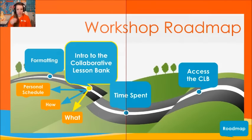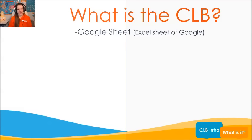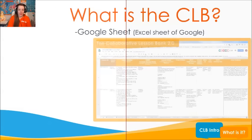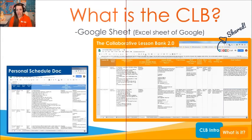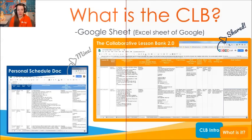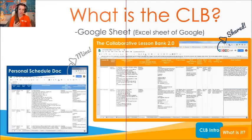Now let's introduce you to the Collaborative Lesson Bank and talk about what it is. It's essentially a Google Sheet — not just one, but two Google Sheets. Google Sheet is basically the Excel of Google. With these two sheets, you're going to make the personal schedule doc one time — this one is for you. Then you're going to share the collaborative lesson bank, which can be shared by everyone who has access. We want your good ideas; we want to collaborate. The personal schedule doc is for you only. Every day you're going to use the lesson bank to make your schedule, and then use your personal schedule to actually teach with and use in class.